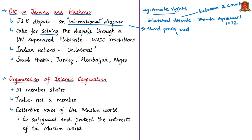OIC calls for settling this dispute through a plebiscite under the supervision of the United Nations — meaning the people in Jammu and Kashmir would vote on whether they would like to join India or Pakistan. OIC calls for dialogue between India and Pakistan, but at the same time also calls for UN mediation and solving of the dispute in line with UN resolutions.